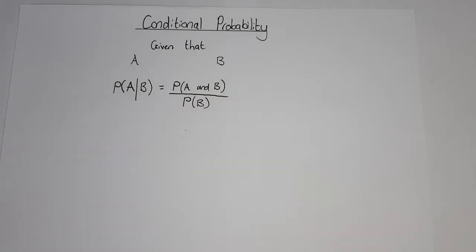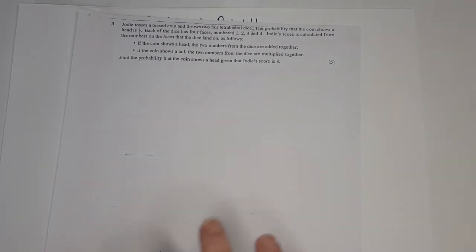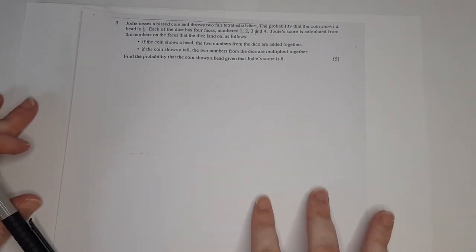Looking at an example: Jody tosses a biased coin and throws two fair tetrahedral dice. The probability that the coin shows a head is 1/3. Each of the dice has four faces numbered 1, 2, 3, and 4. Jody's score is calculated from the numbers on the faces that the dice lands on.